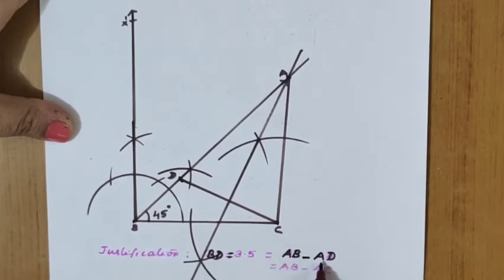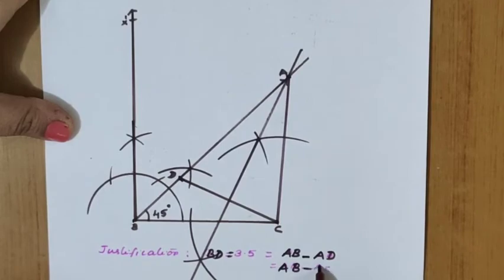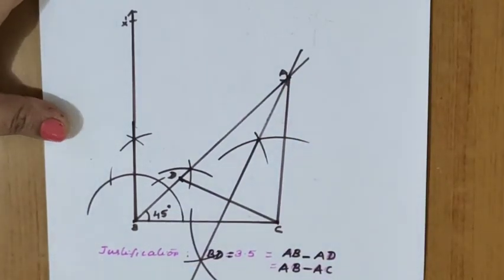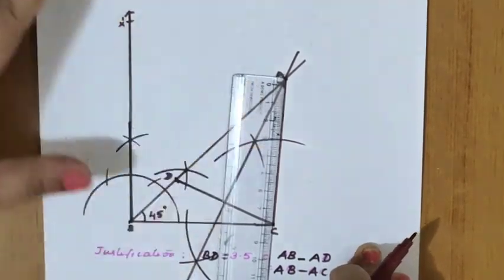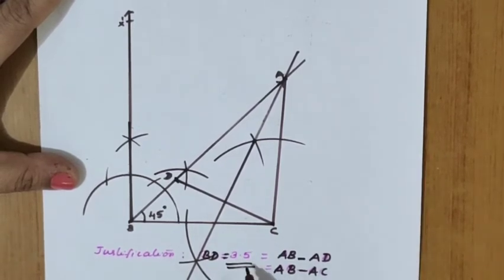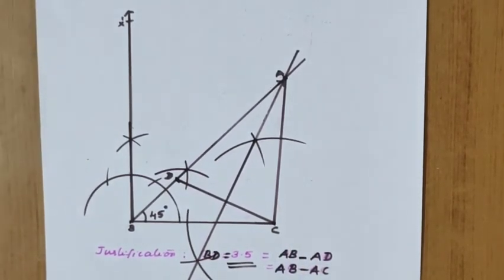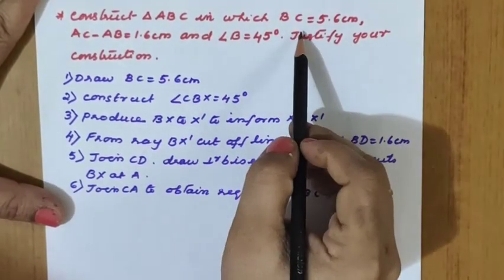AD is replaced with AC since A is on the perpendicular bisector of CD, so AD equals AC. Therefore AB minus AC: take the measurement of AB, then subtract AC — you can verify that it equals 3.5. The justification: BD equals 3.5, so AB minus AC equals approximately 3.5. An actual measurement of 3.6 or 3.7 is also acceptable.